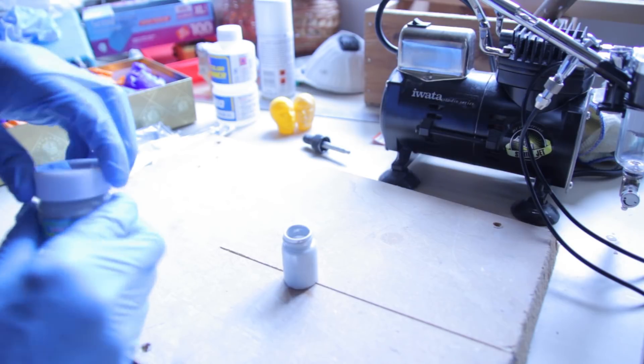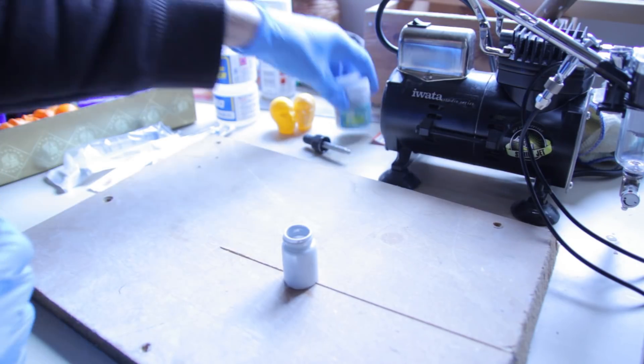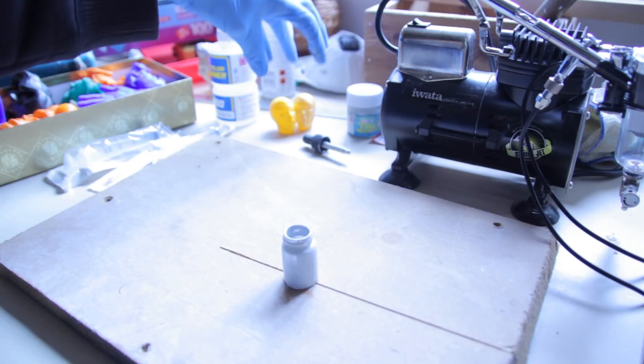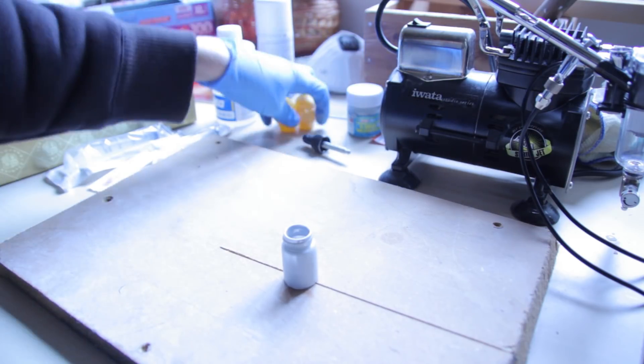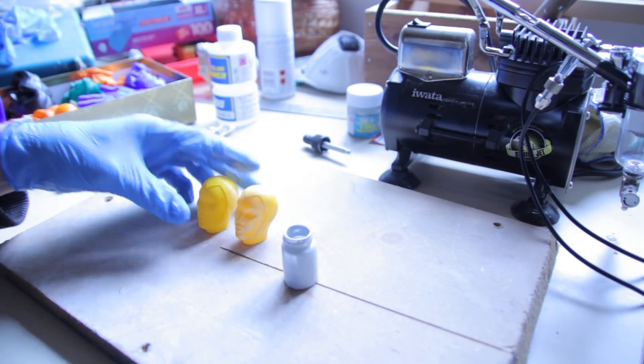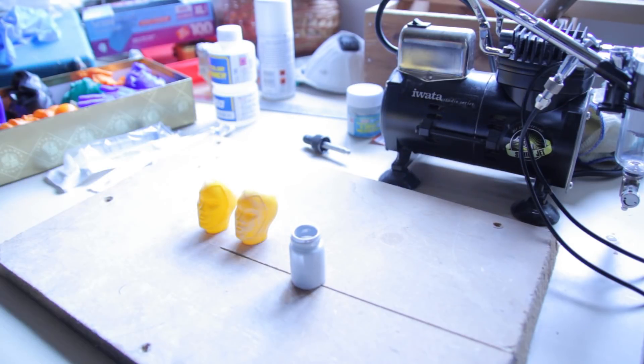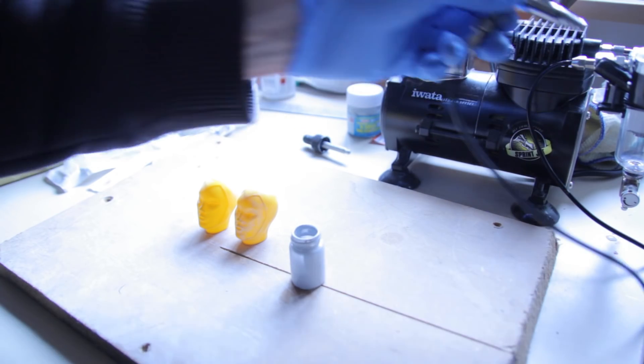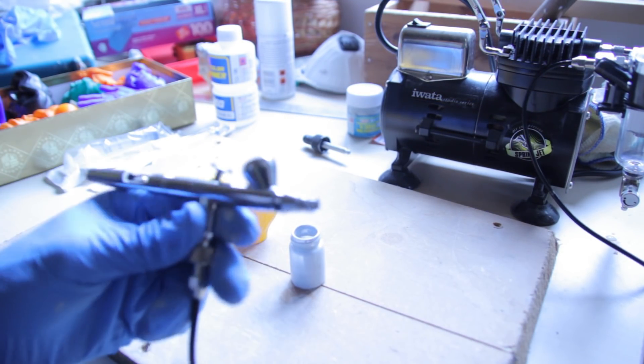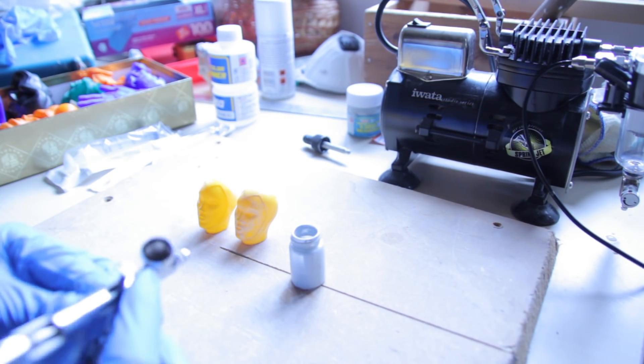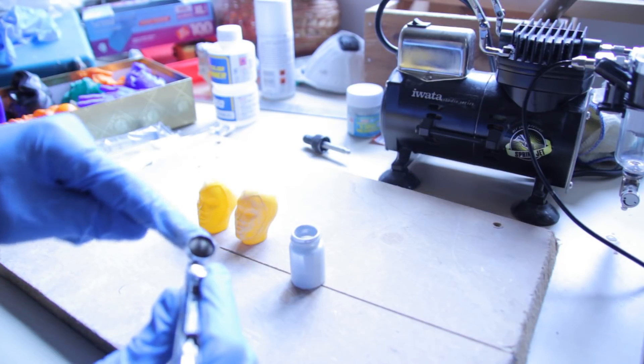All right. So take your primer, put it away. Your hands might be a bit dirty. So we bring the models back and then we get this into the airbrush. So now we'll take the airbrush. This is an Eclipse. Iwata Eclipse in case you're wondering and get that stuff into here.